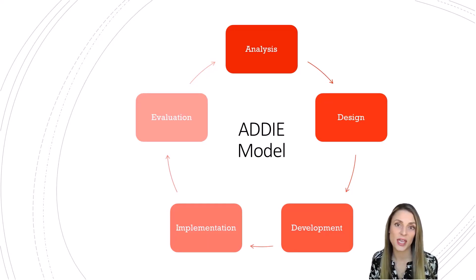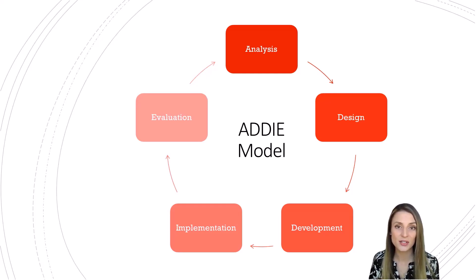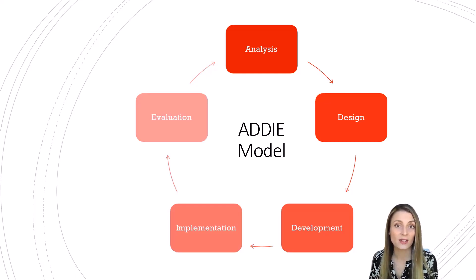It is a cyclical approach to training and design, suggesting that the beginning and the end are sometimes ambiguous. ADDIE is an acronym for the five stages of this particular model: Analysis, Design, Development, Implementation, and Evaluation — ADDIE.